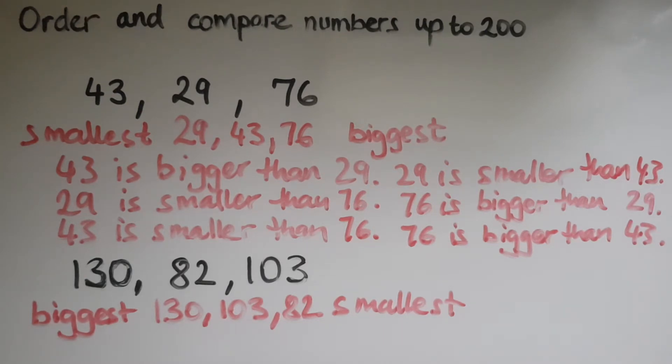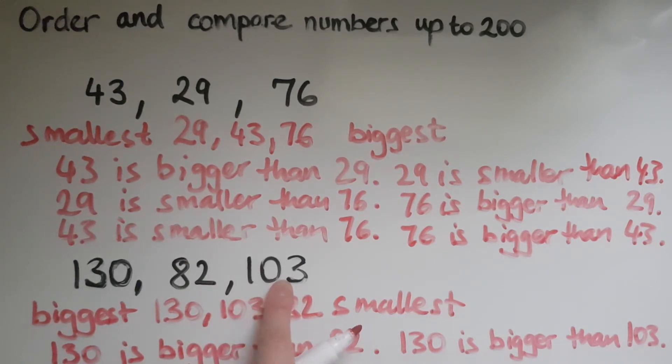Now, if I want to compare these, I would say that one hundred and thirty is bigger than eighty two. One hundred and thirty is also bigger than one hundred and three. And if I compare eighty two and one hundred and three, I'll say that eighty two is smaller than one hundred and three. One hundred and three is bigger than eighty two.